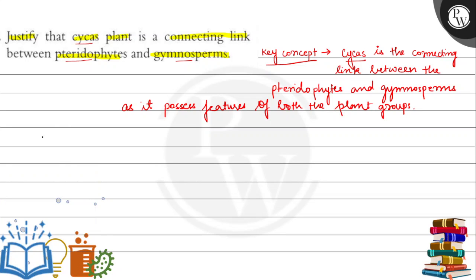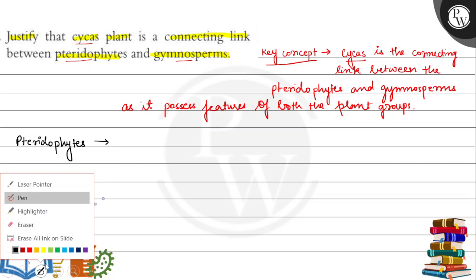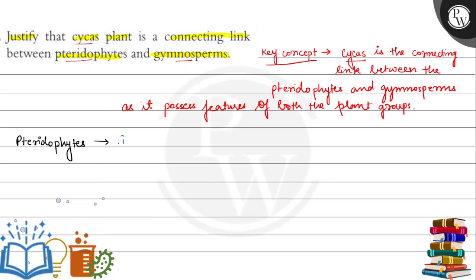Now, if I talk about the pteridophytes, the pteridophyte features are leaf, stem and roots present. Now you will think we will not mention this because leaf, stem and roots are in gymnosperms. But in pteridophytes, true leaf, stem and roots are present.